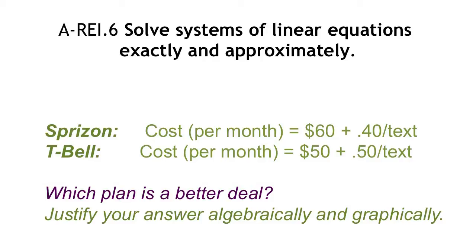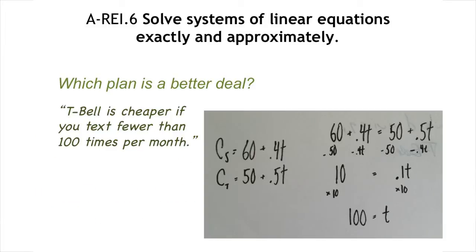Maybe a kid who did this the way we'd want them to, according to a checkbox, would set those two equations equal to each other, solve algebraically, get T equals 100, and conclude T-Bell is cheaper if you text fewer than 100 times per month.